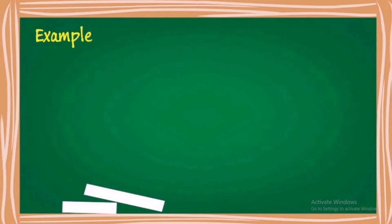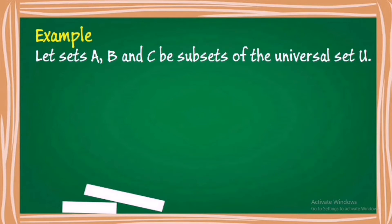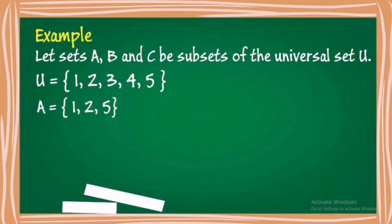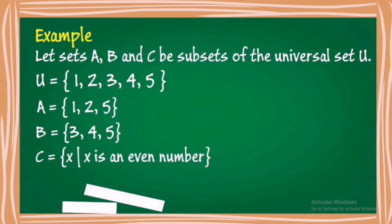Let sets A, B, and C be subsets of the universal set U. The universal set U contains the elements 1, 2, 3, 4, and 5. Set A contains 1, 2, and 5. Set B contains 3, 4, and 5. And set C is described as the set containing X such that X is an even number.